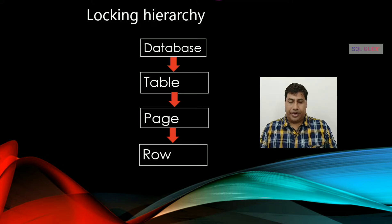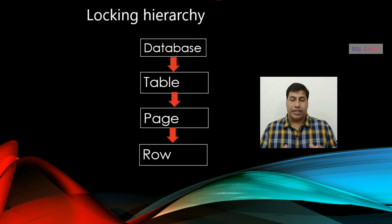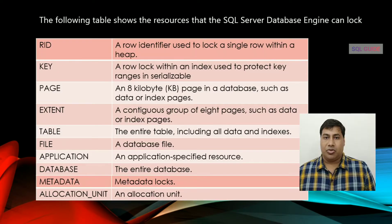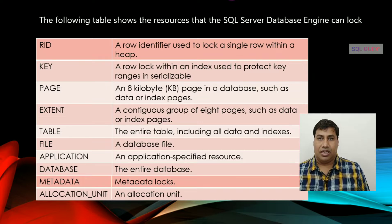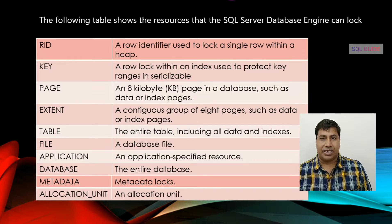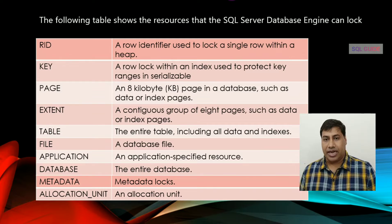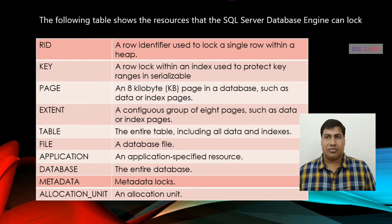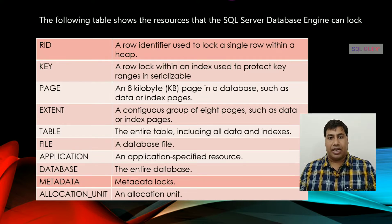Database, table, page, and row — these are the locking hierarchy. You can also see key, page, extent, table, file, application, metadata, allocation unit, and database. These are the resources that the SQL Server Database Engine can lock.